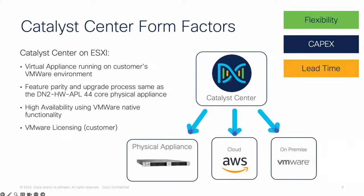The feature parity comes along with the DN2 hardware appliance with 44 cores, so the features and scalability numbers will be matching. There are small limitations you can review in the release notes for what is supported on Catalyst Center on VMware. High availability will rely on the ESXi itself — there is no option today for a three-node cluster, so a single node plus VMware HA functionality will provide the availability needed.